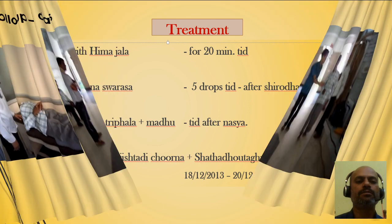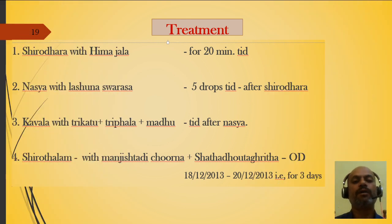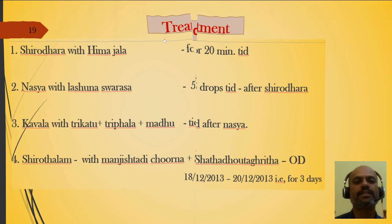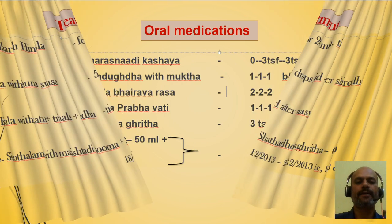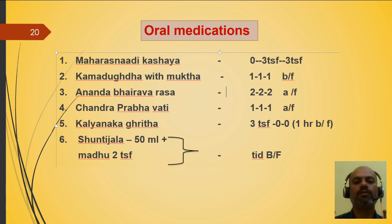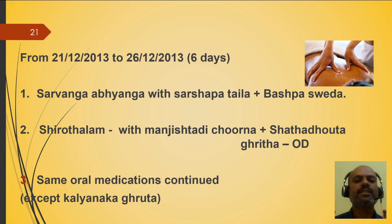Treatment protocol in detail: Shirodhara with Himajala for 20 minutes TID. Nasya with Lashanasarasa, five drops TID after Shirodhara. Kavala with Trikatu, Triphala, and Madhu TID after Nasya. Shirothalam with Manjistha Chuna and Shatpadugrita Odi for three days, along with oral medicines. Oral medicines: Maharasnadi Kashaya 15 ml afternoon and evening after food; Kamadugha with Mukta 1 TID before food; Anandabhairava Rasa 2 TID after food; Chandraprabha Vati 1 TID before food; Kalyanaka Ghrita 15 ml early morning on empty stomach; Suntijala 50 ml and Madhu 10 ml TID before food. Next six days: Sarvanga Abhyanga with Satshapathaila and Baspasweda, continuing Shirothalam and oral medicines except Kalyanaka Ghrita.